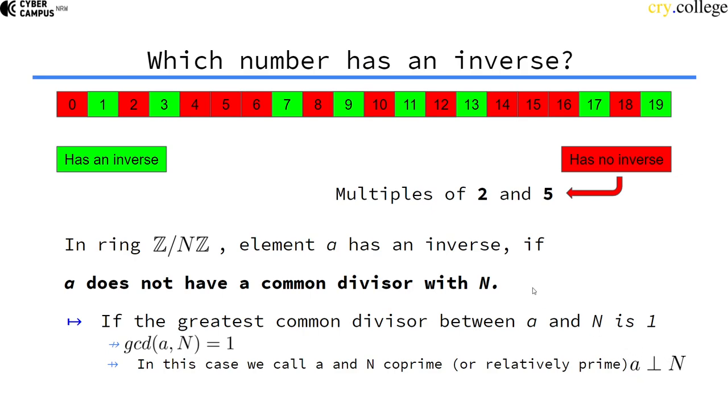We can briefly verify this by looking at the numbers: 10 and 20, the greatest common divisor is 5, not 1, so 10 doesn't have an inverse. 2 and 20, 12 and 20, they all have the common divisor 2, so the greatest common divisor is not 1. They are not coprime, so 12 also doesn't have an inverse in the ring modulo 20.